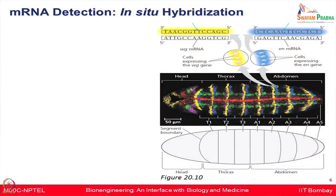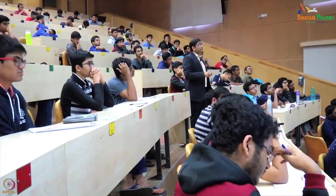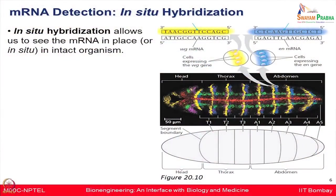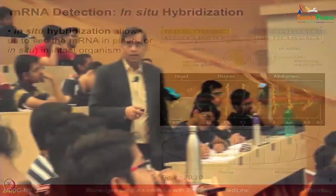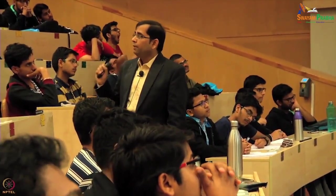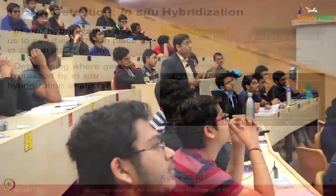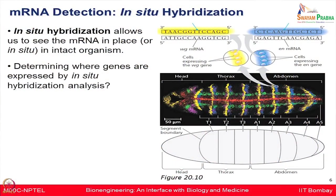Another technique, used to see in live conditions in situ where a particular RNA is expressed, is known as in situ hybridization. This allows us not only to know whether an mRNA is being expressed, but also to see in which cell it is expressed. People have used model systems like Drosophila for these experiments. The experiment objective here was to determine where genes are expressed by doing in situ hybridization analysis.